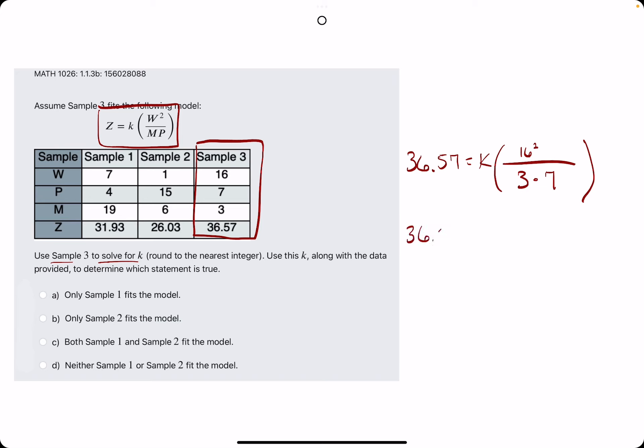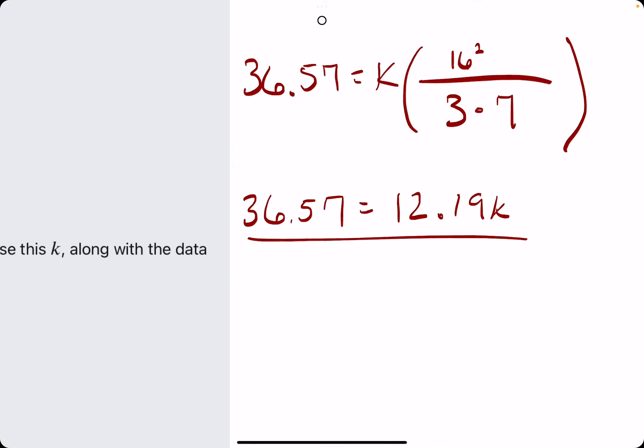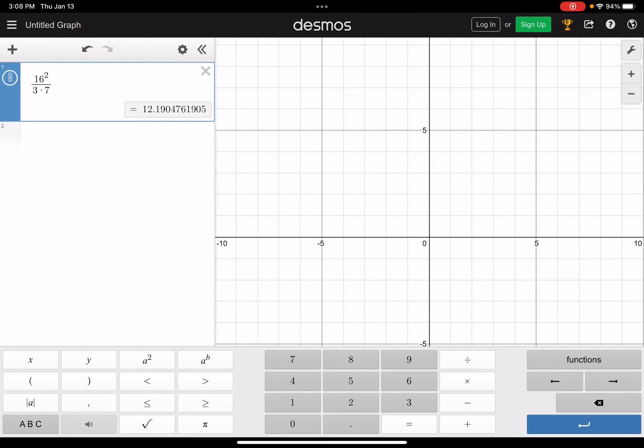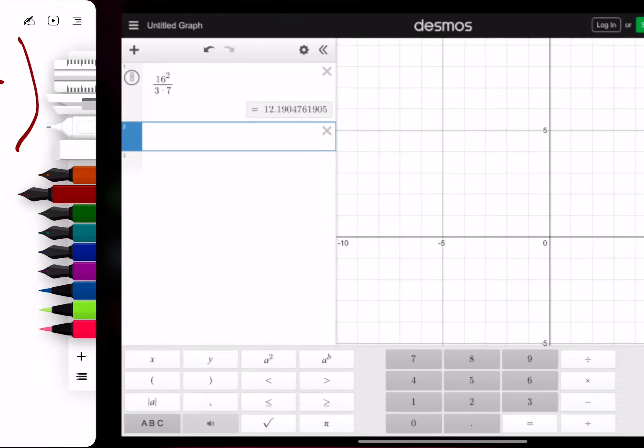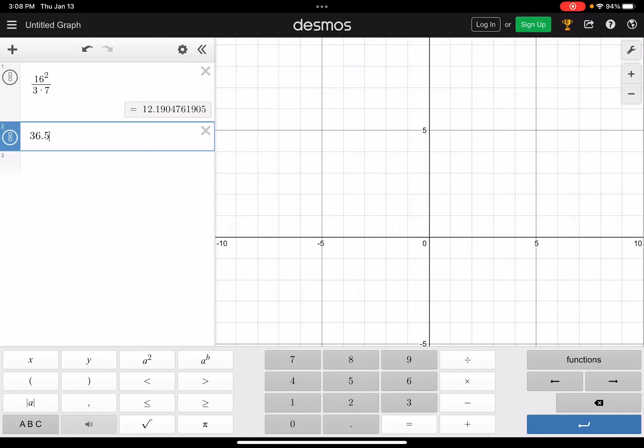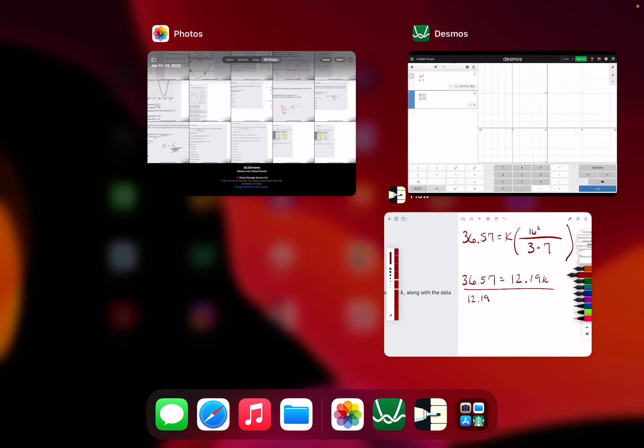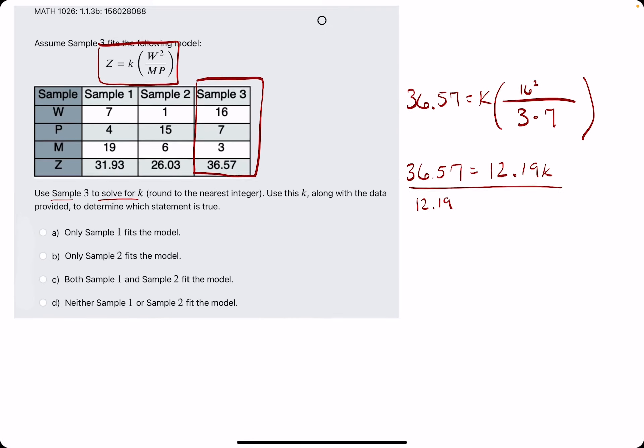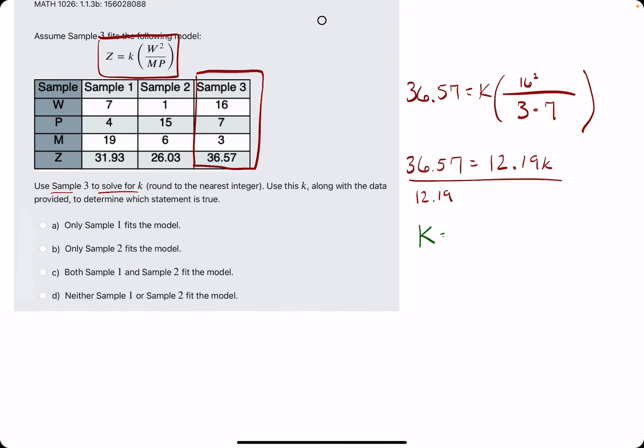So we have 36.57 equals 12.19k. To get k by itself, we will, of course, divide by 12.19. So that's 36.57 divided by 12.19, and that gives us exactly 3. That's pretty nice. Hopefully a good sign that we're on the right track just because it gave us a nice integer value.